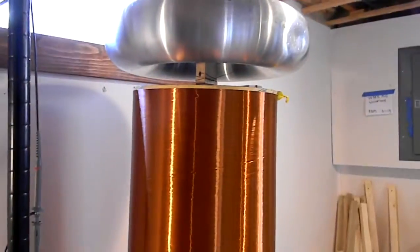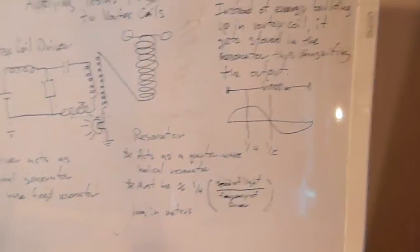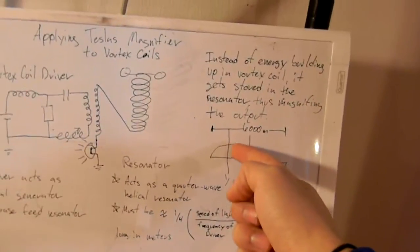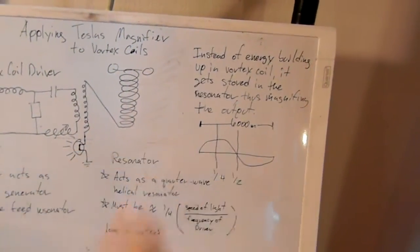So what this is, is a coil with 1,500 meters on it, which is 1/4th of the wavelength. Therefore it develops a voltage maximum at the top and a current maximum at the bottom.